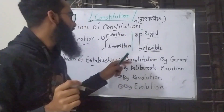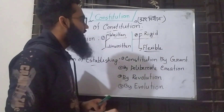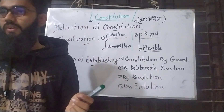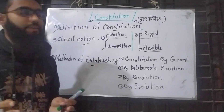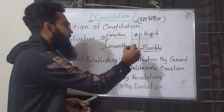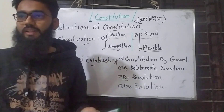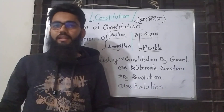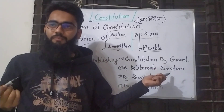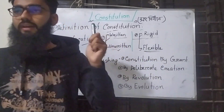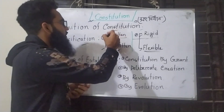So we can see that the written constitution is generally rigid. The unwritten constitution is flexible. For example, the UK constitution is unwritten and therefore flexible — it is easy to change, like the British and American unwritten conventions.